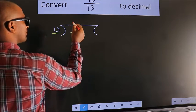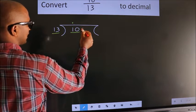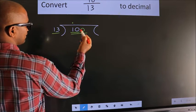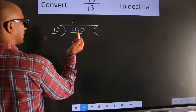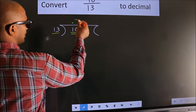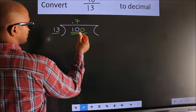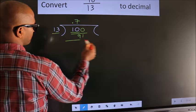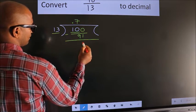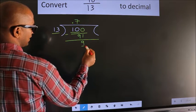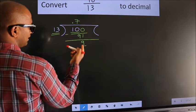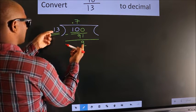10 is smaller than 13, so we put a dot here and take a 0, giving us 100. A number close to 100 in the 13 times table is 13×7=91. Now we subtract and we get 9.